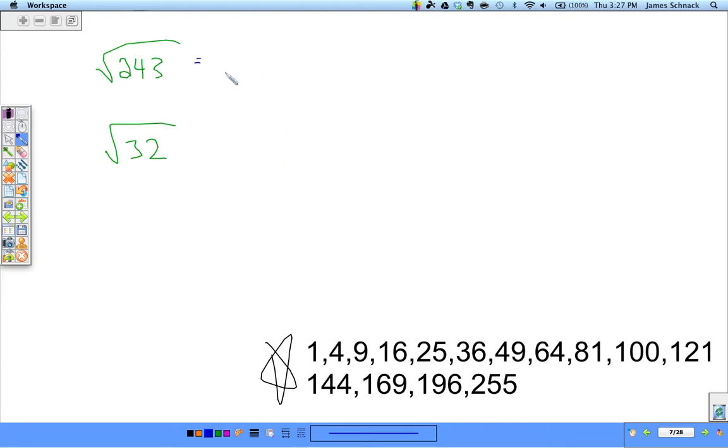Okay, what perfect square goes into 243? 81 does, 3 times. Why did we choose 81? Because the square root of 81 is 9. The square root of 3 stays square root of 3. There's nothing we can do.